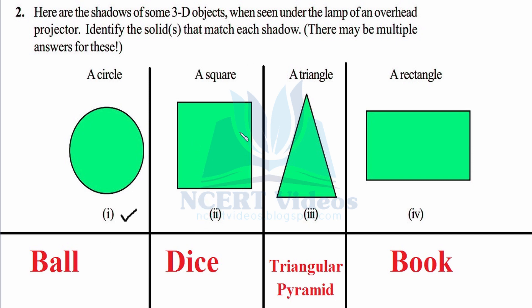Second, a square. Well, dice gives you a square shape, and a box in the shape of a cube can also give you a dice shadow. A triangle: a triangular pyramid will give you a triangle shape, or a prism can also give you a triangular shadow. That's third.